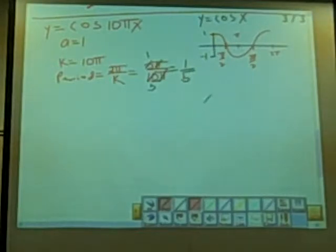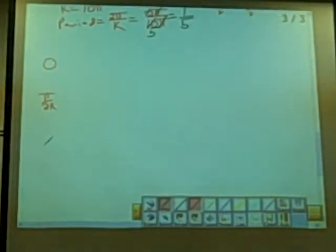But our period has changed. And so we go ahead and write our increments down: 0, π/2 times k, π over k, 3π/2 times k, and 2π over k.